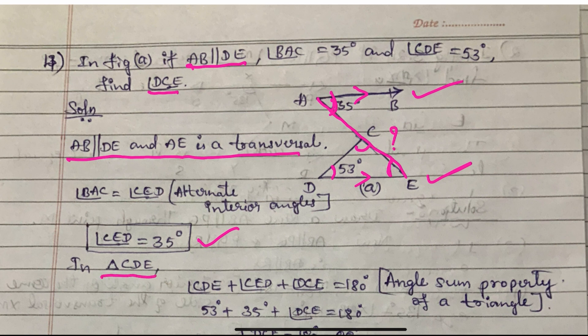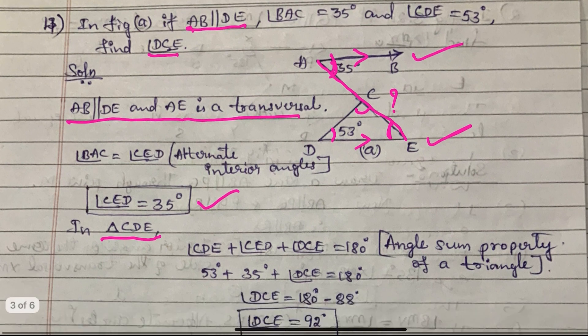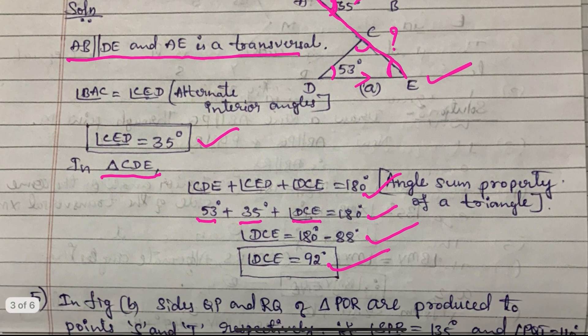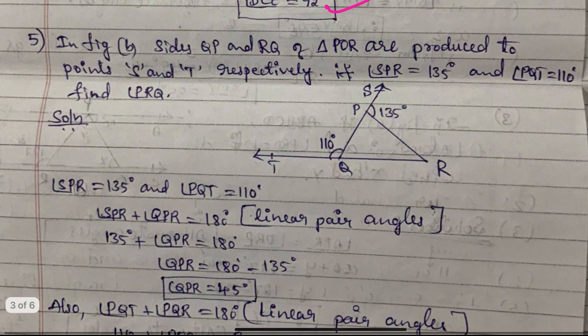In triangle CDE, the sum of the three angles equals 180 degrees. We know two angles: 53 degrees and 35 degrees. So angle DCE equals 180 minus 53 minus 35 equals 92 degrees. We can find the answer quickly like this.